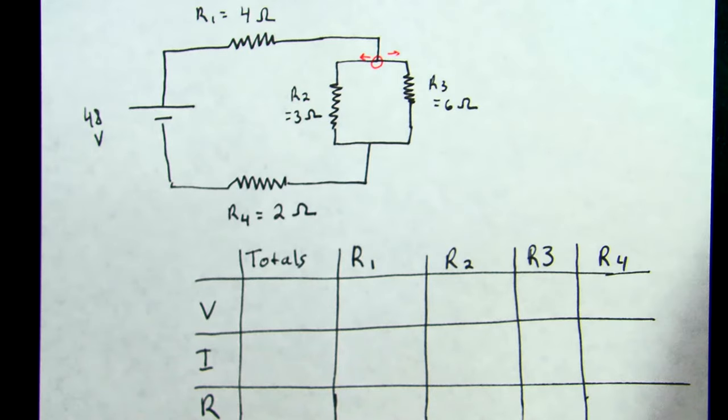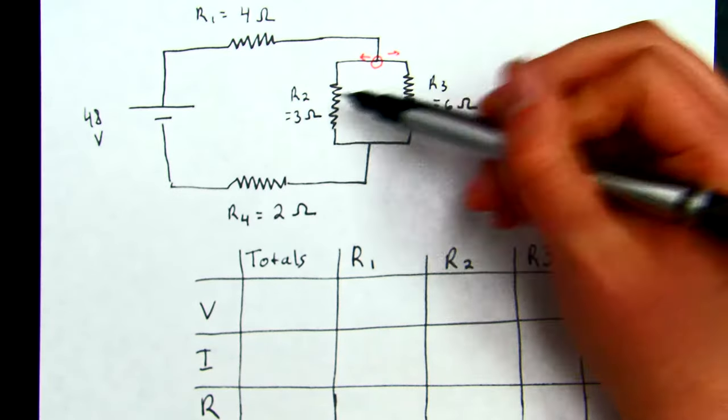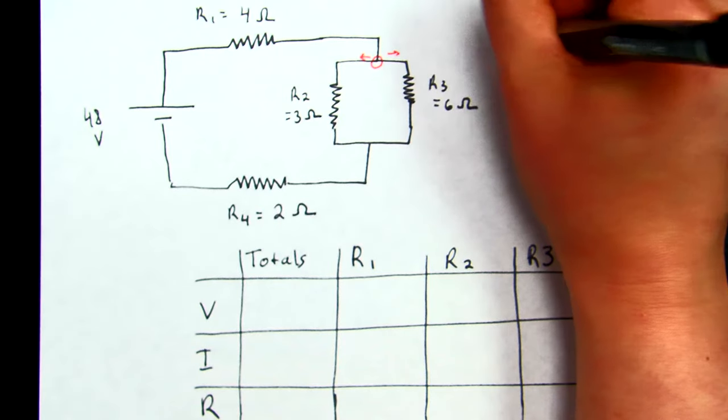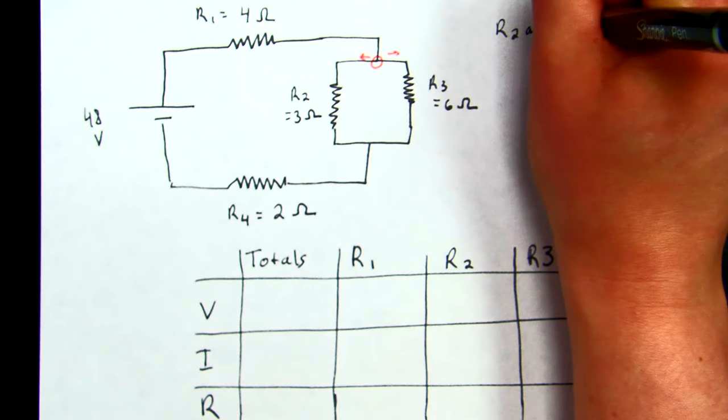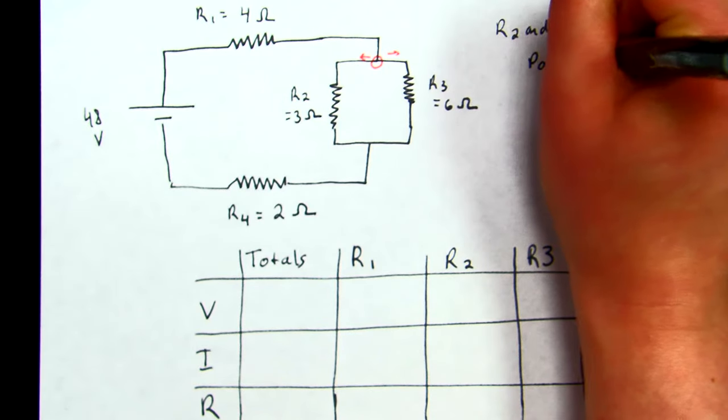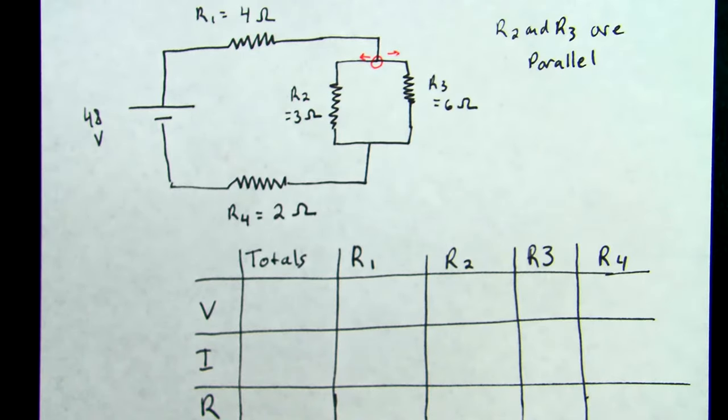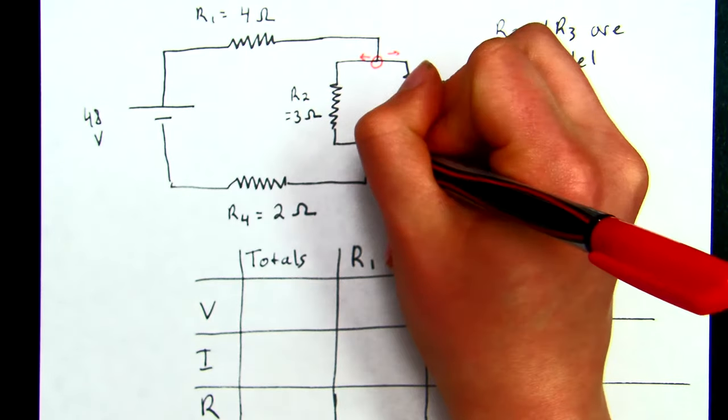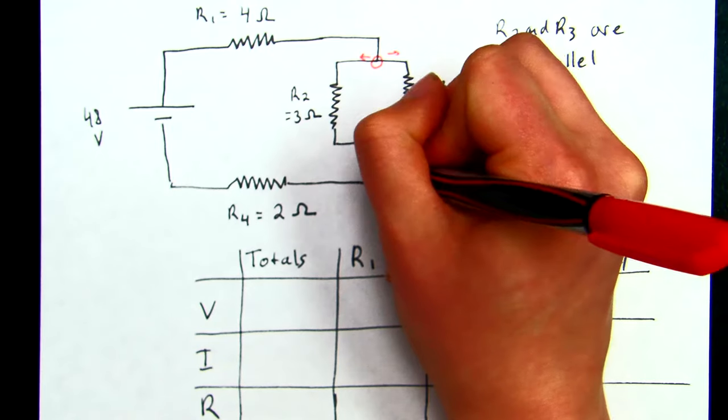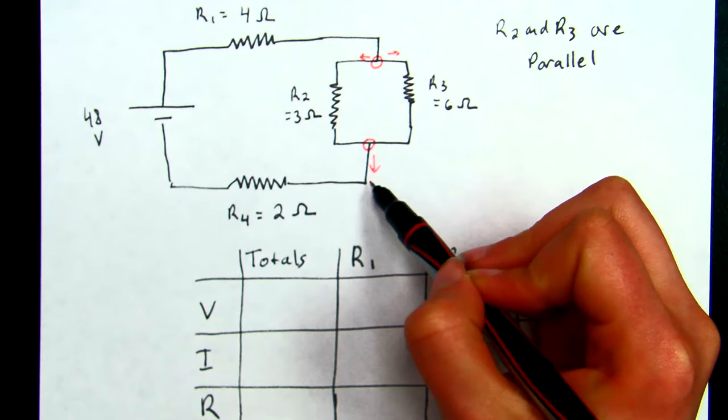Branch point means there are two options that our current can travel through. And so we have the option here to go through R2 or R3. So we would say that R2 and R3 are parallel to each other. After we pass through either R2 or R3, we see another branching point where we're coming back in, and we're reconnecting, and our circuit continues on.